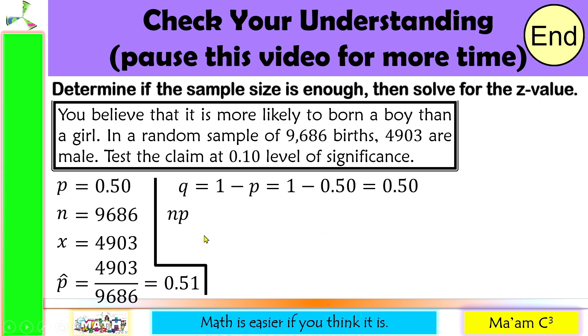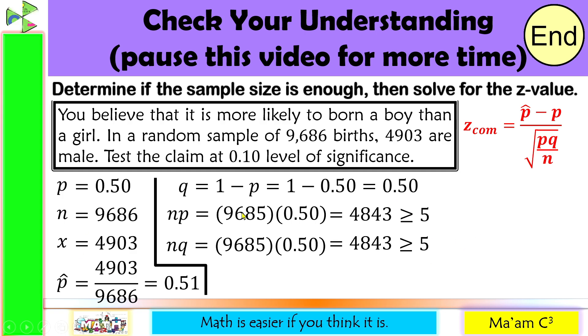Let us continue. Let us solve for our Q, and that is equal to 1 minus P. So 1 minus 0.50 is also 0.50. Now, let us solve for NP. Again, our N is 9,686, and our P is 0.50. This will give us 4,843, and this is greater than 5. Now, for NQ, since my P and Q are equal, then I expect the same answer, so this is also greater than 5. Now, let us solve for the Z value. Let us substitute our given here. Our P hat is equal to 0.51, our P is 0.50. Again, P is 0.50, Q is also 0.50, and our N is 9,686. And this will give us 1.97.